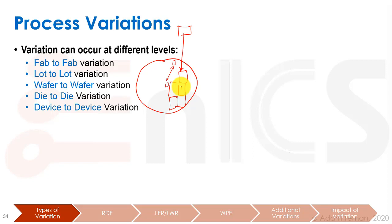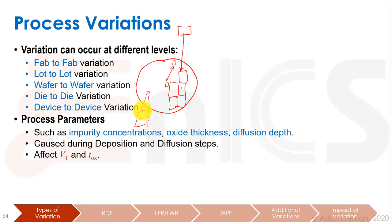However, there's also what we call device-to-device variation. If we take a specific die and look at it, we will have a difference between a transistor over here and a transistor over there — that's device-to-device variation. What are the types of things that cause variation?